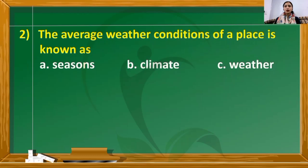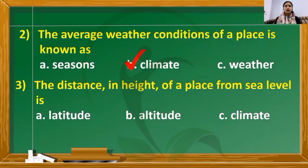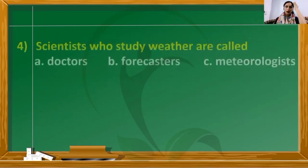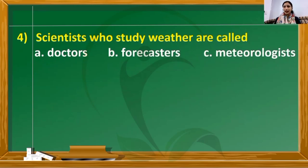The second question: the average weather conditions of a place is known as? The correct answer is climate. The third question: the distance in height of a place from sea level is? The correct answer is altitude. The fourth question: scientists who study weather are called? The correct answer is meteorologists — meteorologists are the scientists who study weather.